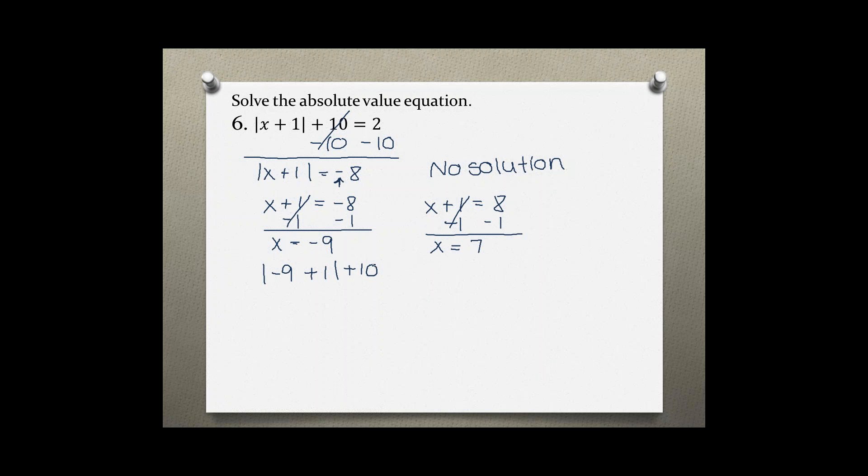The absolute value of negative 8 plus 10 equals 2. This gives you 8 plus 10 equals 2, and 8 plus 10 is 18, which you would realize is not equal to 2. So this is not a true statement, which means this does not check out.